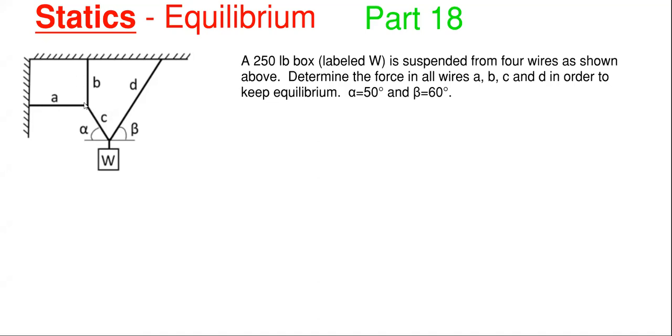So we have wire A, B, C, and D. And it says determine all the forces in all the wires A, B, C, and D in order to keep equilibrium. And we're also told that alpha here is 50 degrees and this beta over here is 60 degrees.